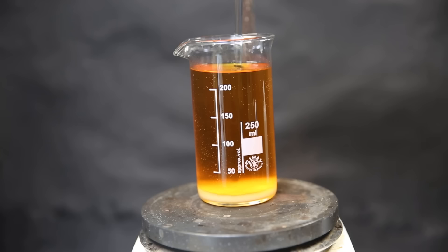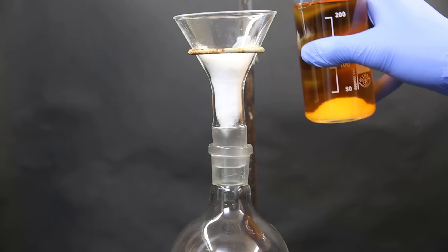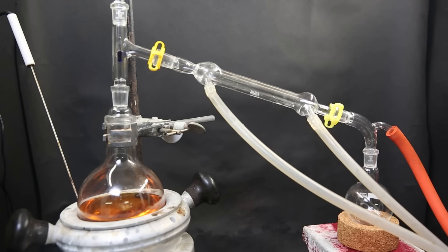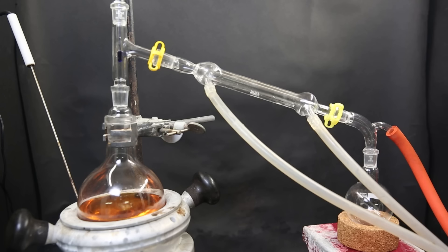Now to remove any remaining water, I dry the mixture with anhydrous sodium sulfate. I then filter the mixture through some cotton to remove the solids. When that is done, I take the filtered mixture and set it up for a vacuum distillation to boil off all of the ethyl acetate.